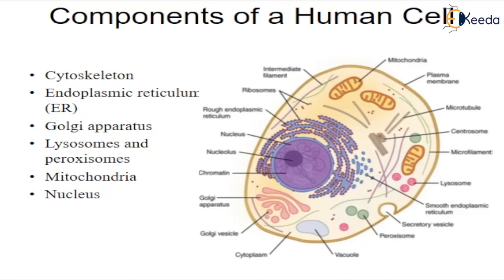Golgi apparatus. A flattened, layered sac-like organelle that looks like a stack of pancakes, also called the Golgi complex. The Golgi apparatus packages molecules processed by the endoplasmic reticulum to be transported out of the cell. It is located near the nucleus. It produces the membranes that surround the lysosomes, and packages proteins and carbohydrates into membrane-bound vesicles for export from the cell.